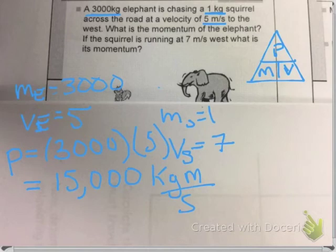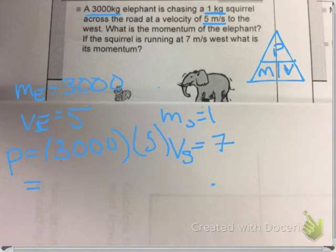All right. Well, make sure you get this part written down because I'm going to erase it to make some room. I'm going to erase the elephant's momentum. There we go. All right. On to the squirrel.